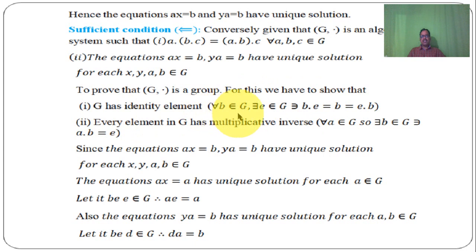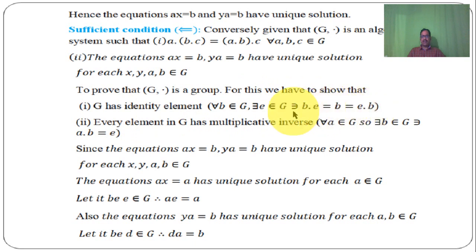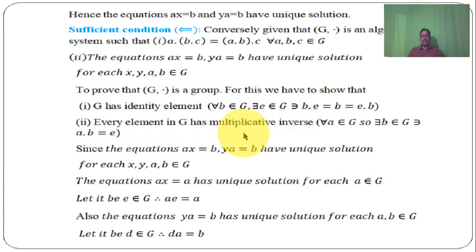By definition of identity: for each B belongs to G, there exists E belongs to G such that B dot E equal to B equal to E dot B. This is the identity definition we need to prove. After that, we need to prove the inverse property: every element in G has a multiplicative inverse. For each A belongs to G, there exists B belongs to G such that A dot B equal to E.